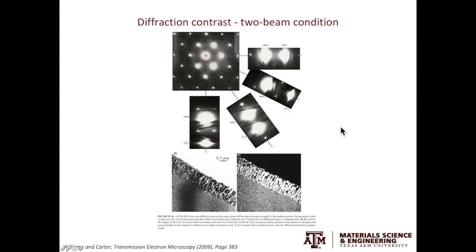To tilt a crystal to a two-beam condition, the easiest way is to tilt the crystal first to a low index zone axis. For example, if you are interested in exciting the 200 spot, what you have to do is tilt the crystal along the Kikuchi line that is perpendicular to the G vector. You can use the same technique to achieve the two-beam condition with other diffraction spots.